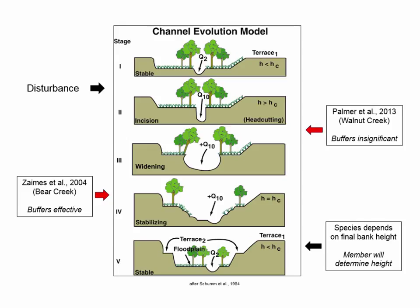How does this help us target buffers? In the field I saw forests falling into creeks at the same rate as cornfields, and wondered why trees along the bank weren't stabilizing them. In 2004, George Zames studied vegetated buffers on stream bank erosion in Bear Creek and found them very effective, especially forest. But in 2013, Jason Palmer studied Walnut Creek and found that buffers and land cover really weren't significant in erosion rates — in fact, forest had the highest erosion rate of all vegetation types. I heard this at a conference and felt pretty bummed out, since I'm trying to promote trees along creeks.